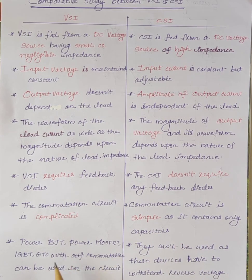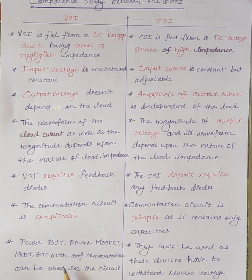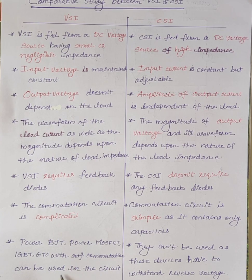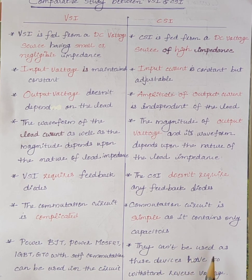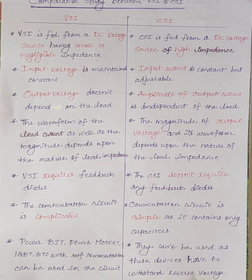Lastly, power BJT, power MOSFET, IGBT, and GTO with self-commutation property switches can be used in voltage source inverter. But they cannot be used in current source inverter, as these devices have to withstand reverse voltage.